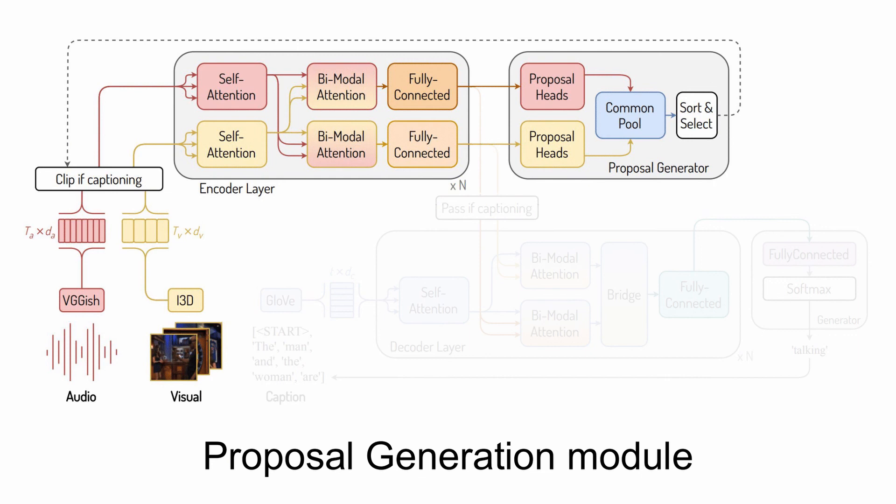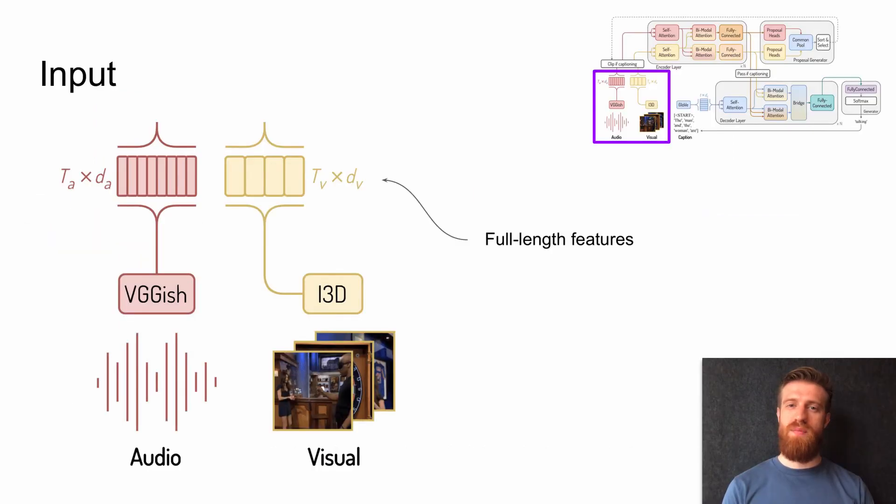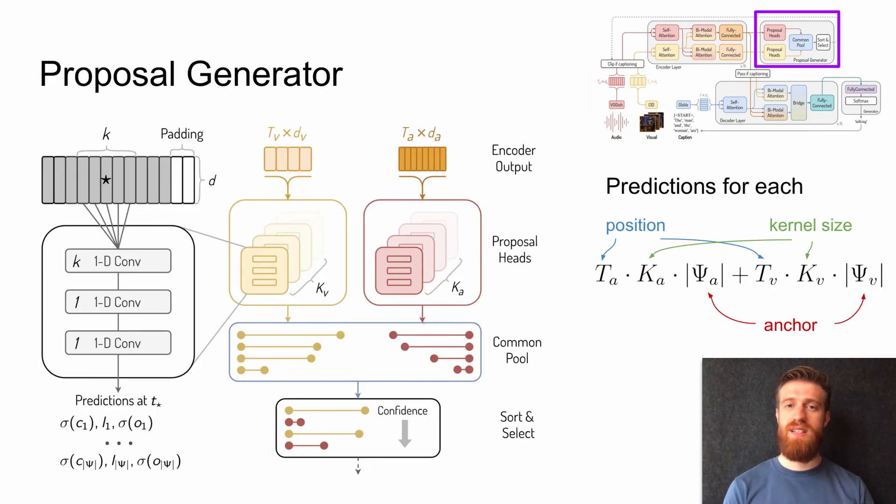Now let's consider the proposal generation module. It consists of two parts: the bimodal encoder and the bimodal proposal generator. The bimodal encoder resembles the bimodal encoder in the captioning model. The proposal generator outputs a set of proposals for the important events to caption. The input to the proposal generator consists of features extracted from the entire video. These features are first passed through the bimodal encoder. The multi-headed proposal generator takes two streams of features coming from the bimodal encoder. Both streams go into individual stack of proposal generation heads.